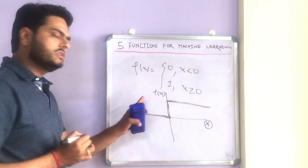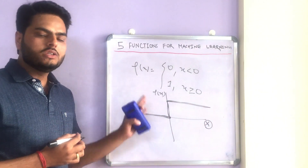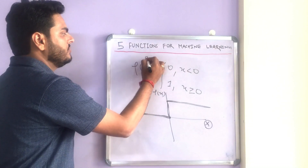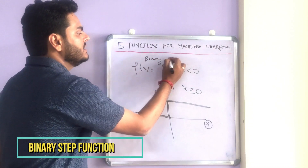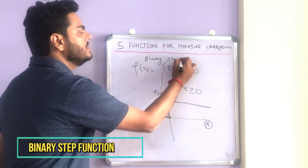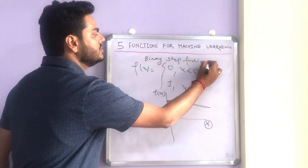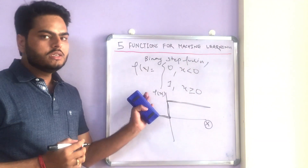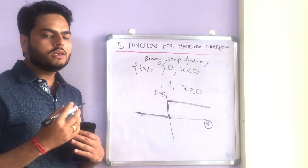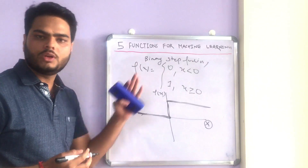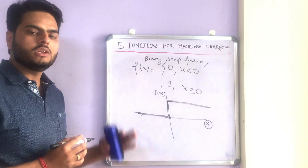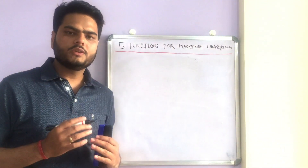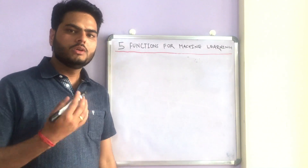This function that we are discussing is known as the binary step function. This is one of the important functions used very frequently in CNNs, LSTMs, and other deep learning neural networks. So this is function number one. Let us discuss some more functions from a machine learning point of view.